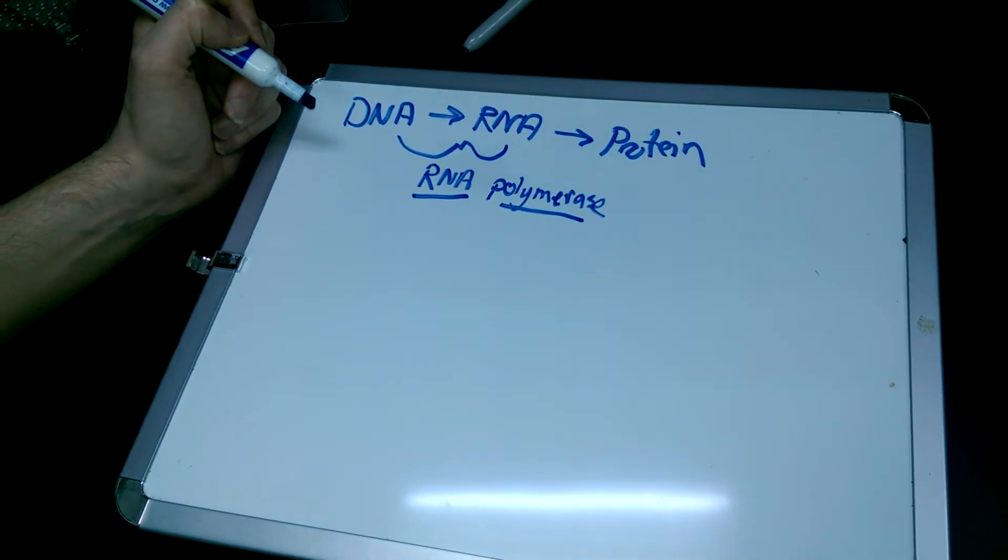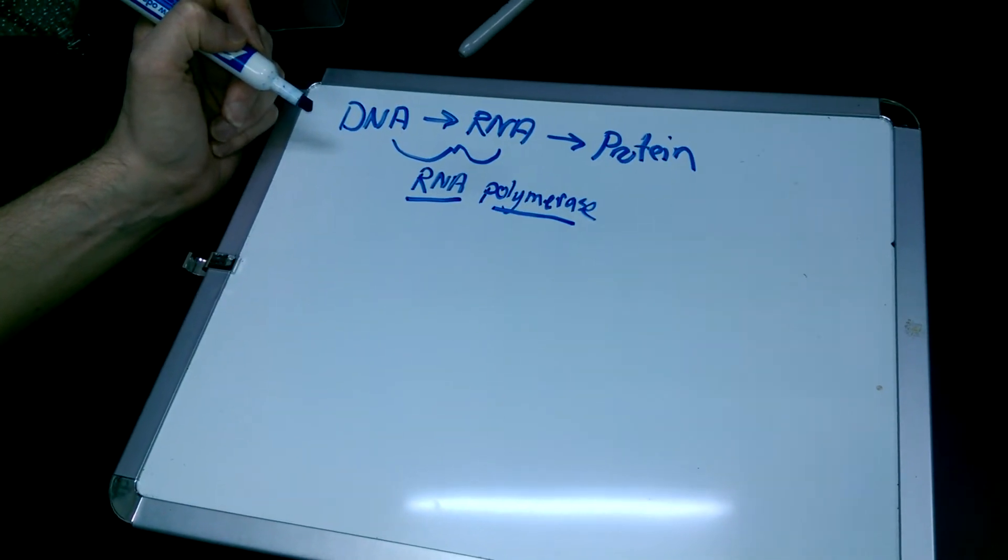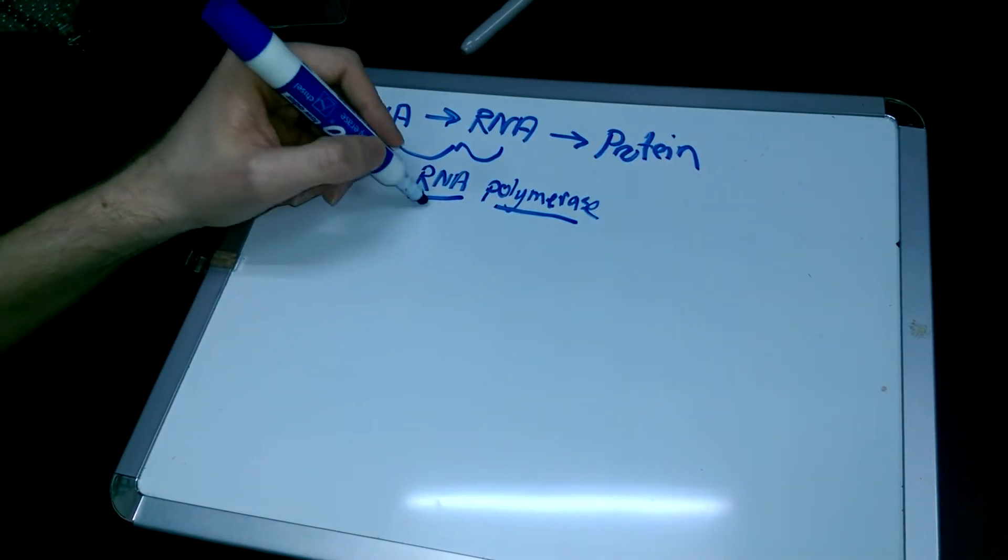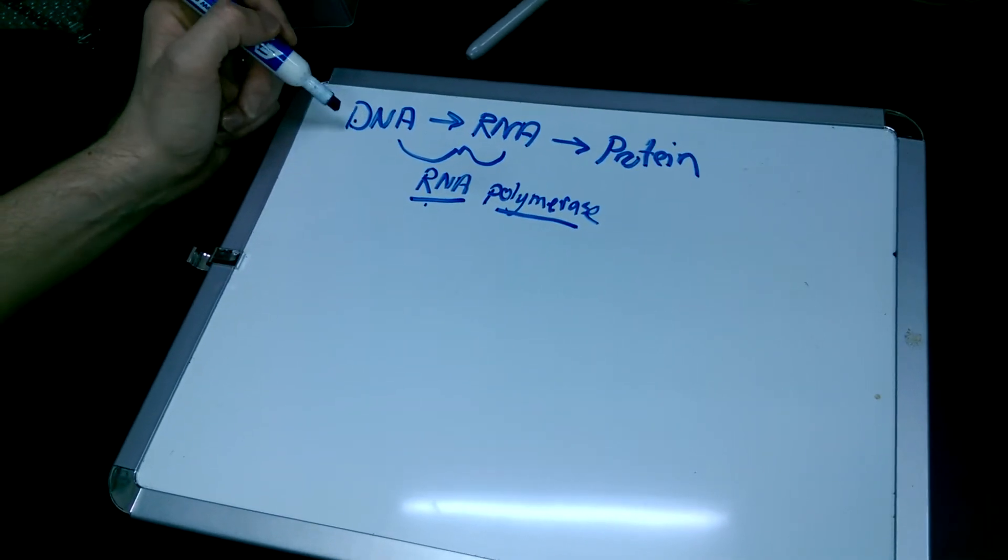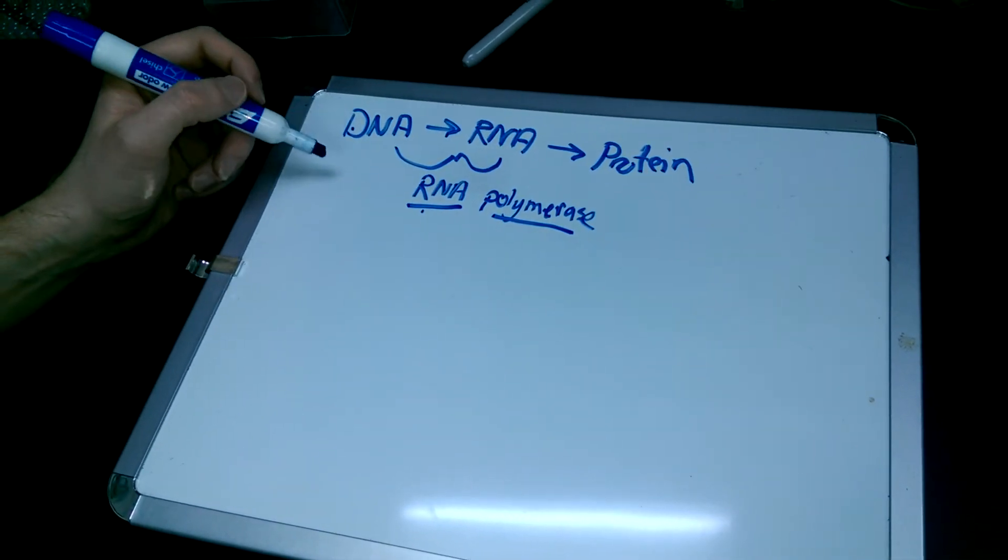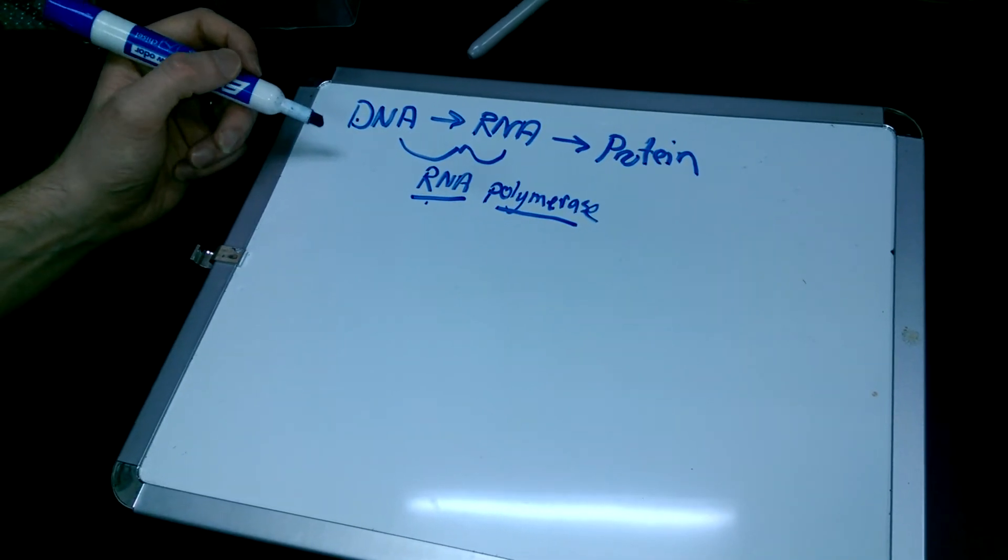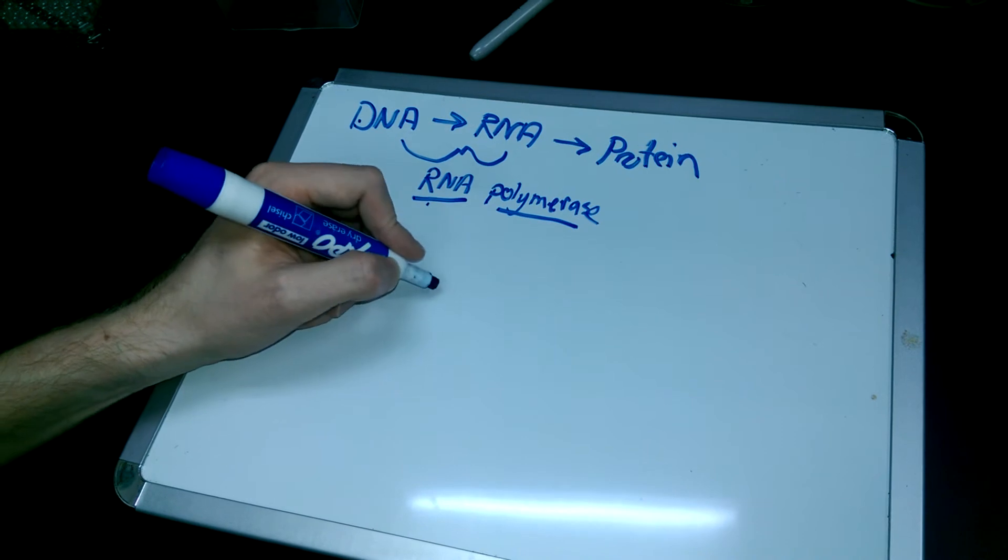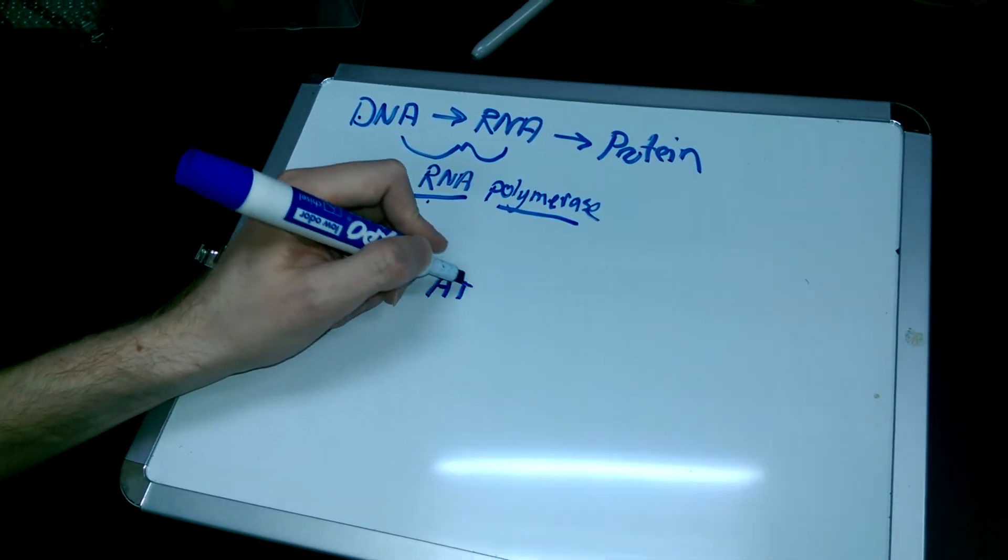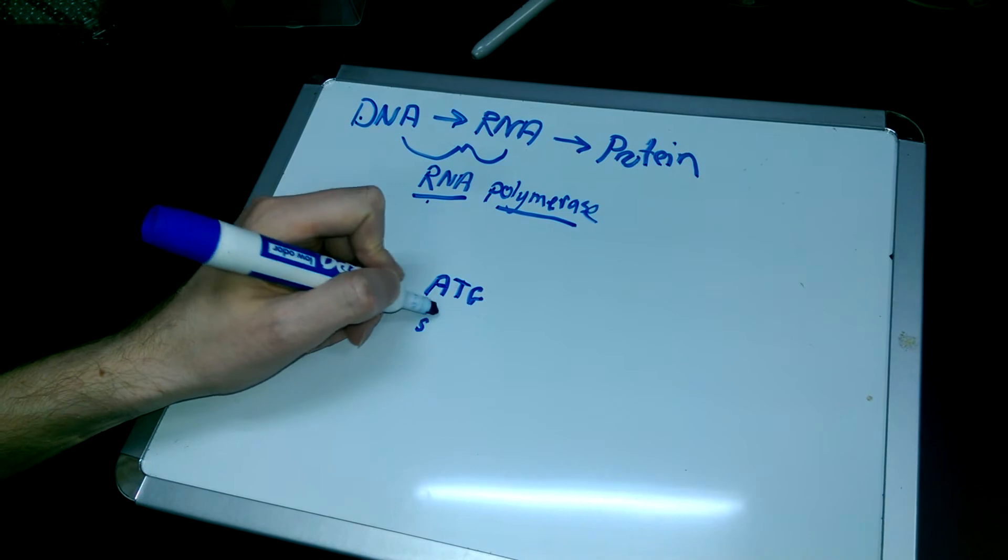Now, essentially the question of turning on a gene gets to RNA polymerase coming in and converting a piece of DNA in the genome into a piece of RNA. But you have to basically call the RNA polymerase to a very specific spot within the genome. So typically a gene will start with three little letters: A, T, G. This is usually the start codon.